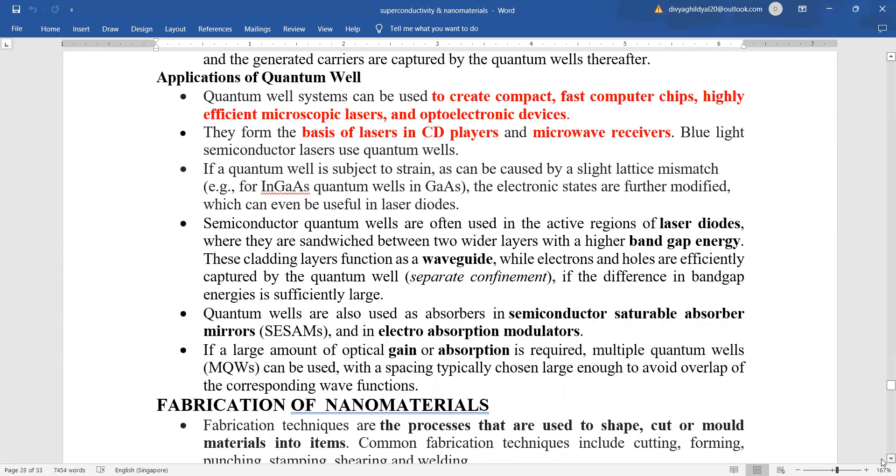The biggest application of quantum wells is to create compact, fast computer chips, highly efficient. They form the basis of layers in CD players. Quantum wells can be used in laser diodes. They can be used in semiconductor saturable absorber mirrors and in electron absorption modulators. Thank you.